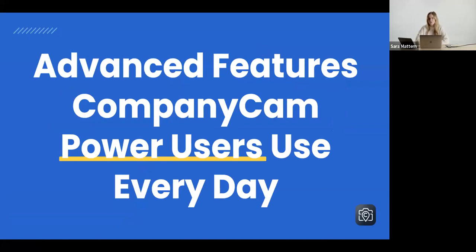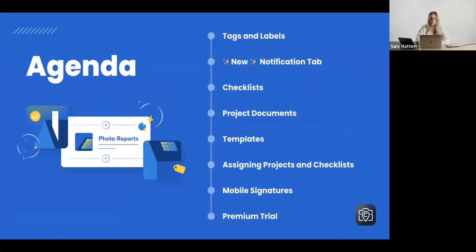Some of these are new and improved features that we did in 2023, like our notifications. Here's our full outline: tags and labels, that notifications tab that we changed this year. We'll go through along with our checklists, project documents — we've made some adjustments there as well — templates, assigning projects and checklists, mobile signatures, and how to set up a premium trial.